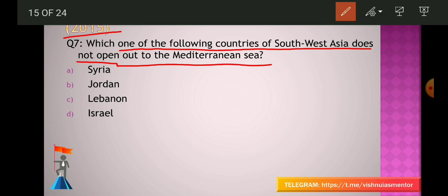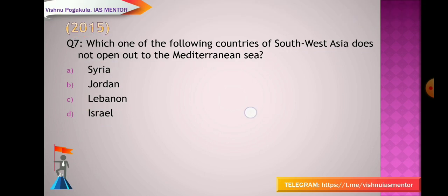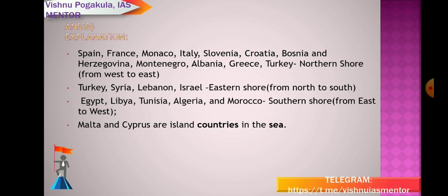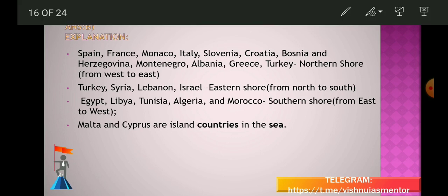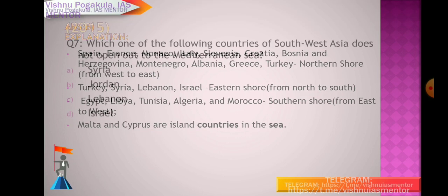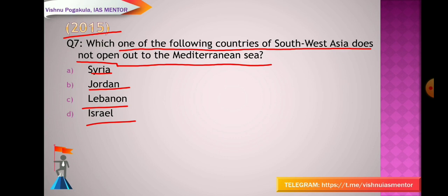The answer is B — Jordan. Syria, Lebanon, and Israel are all surrounded by the Mediterranean Sea, but Jordan is not. Countries along the Mediterranean include: northern shore — Spain, France, Monaco, Italy, Slovenia, Croatia, Bosnia and Herzegovina, Montenegro, Albania, Greece, Turkey; eastern shore (north to south) — Turkey, Syria, Lebanon, Israel; southern shore (east to west) — Egypt, Libya, Tunisia, Algeria, Morocco. Island countries: Malta and Cyprus.